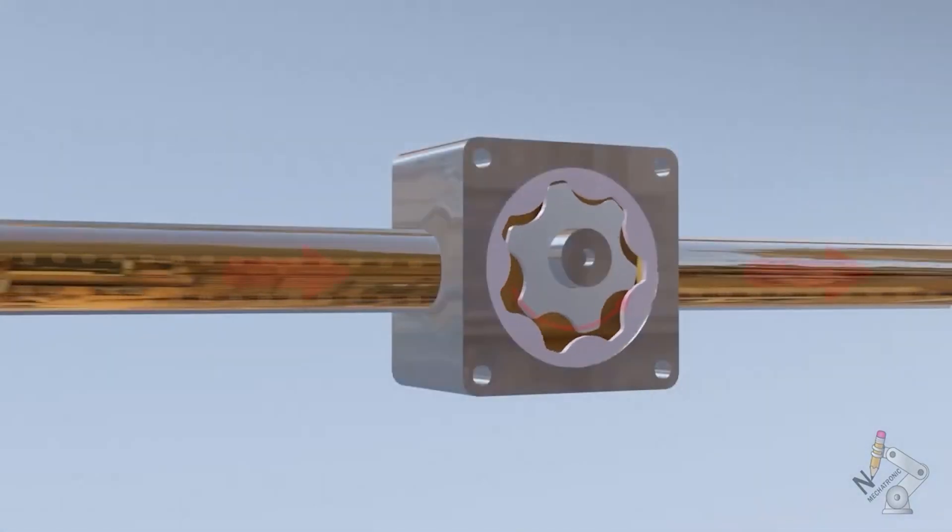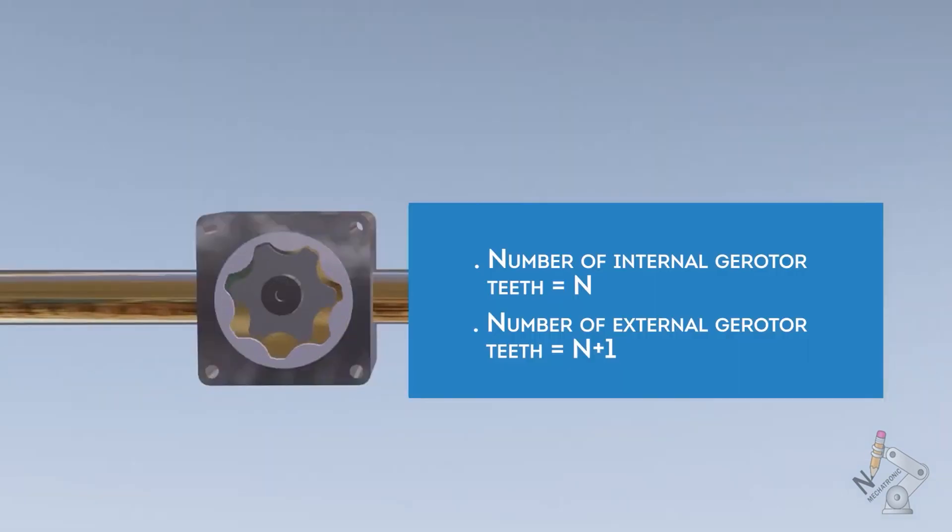The operation is very similar to the internal gear pump, with the difference that there is no crescent separating the gear teeth. The number of teeth on the outer rotor always exceeds the number of teeth on the inner rotor by one.